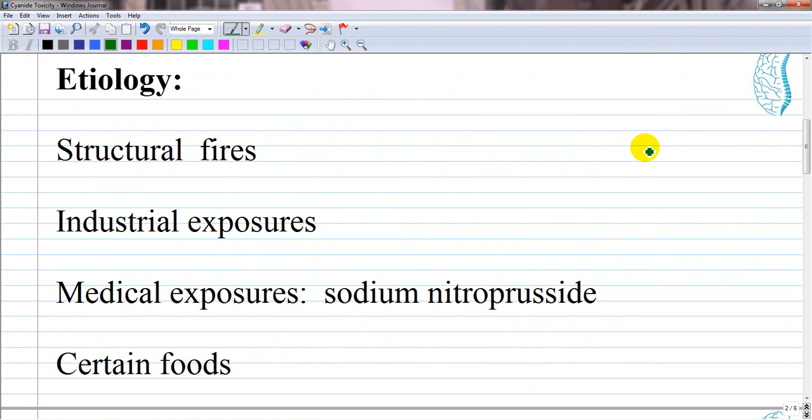As we can see, cyanide poisoning may result from a variety of exposures, including structural fires, industrial exposures, medical exposures such as sodium nitroprusside and certain foods. Most common of cyanide poisoning is domestic fires.